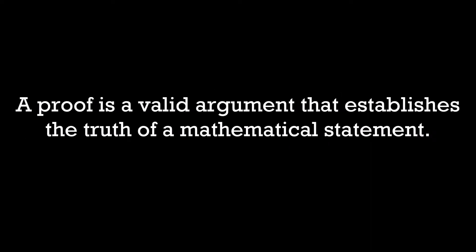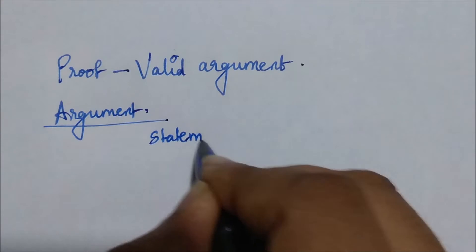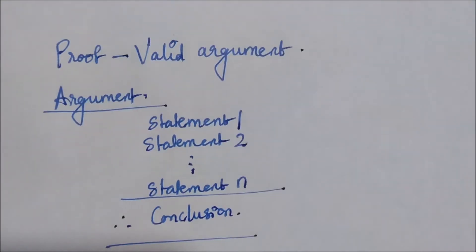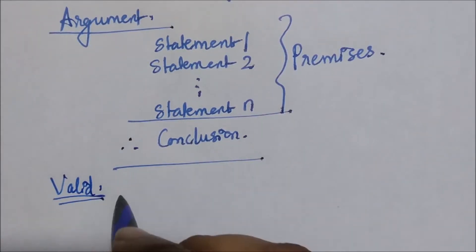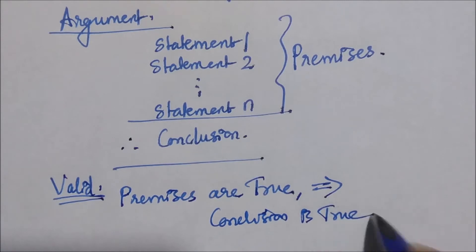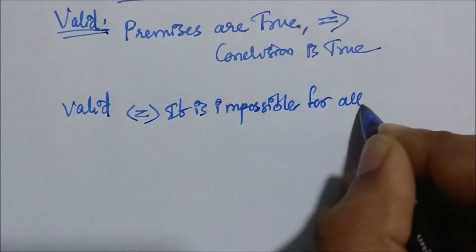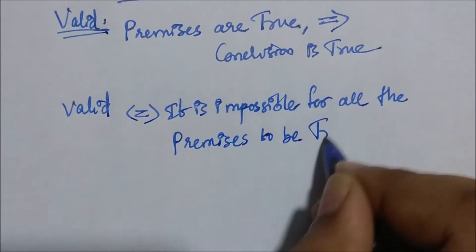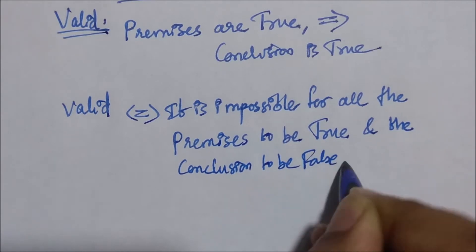What is a proof? A proof is a valid argument that establishes the truth of a mathematical statement. By argument we mean a sequence of statements that ends with a conclusion, and by valid we mean that the conclusion must follow from the truth of the preceding statements or premises. A statement is valid if and only if it is impossible for all the premises to be true and the conclusion to be false.